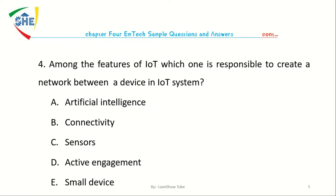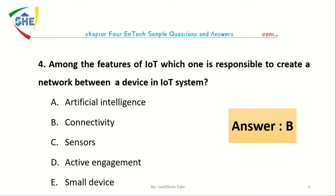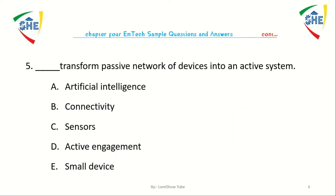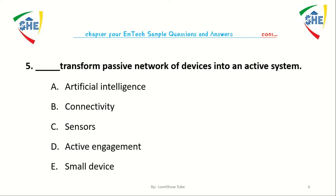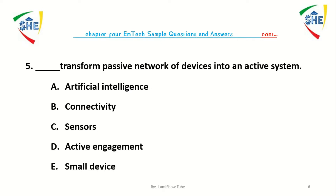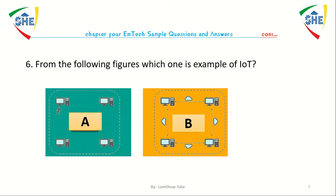Question number four: Among the features of Internet of Things, which one is responsible for creating a network between devices in a system? A. Artificial intelligence, B. Connectivity, C. Sensors, D. Active engagement, E. Small device. From the following figures, which one is an example of Internet of Things?